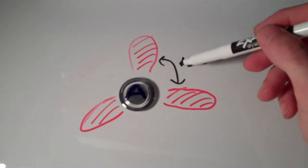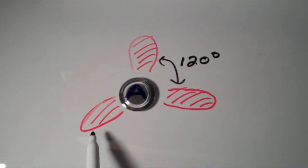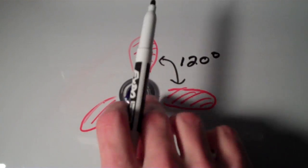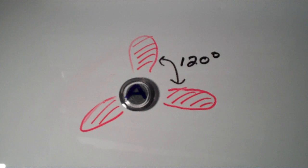So, the angle between these two is the same as the angle between these two is the same as the angle between these two. All of those angles are 120 degrees. And this shape is what we call trigonal planar.